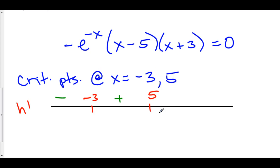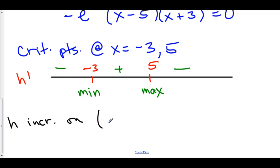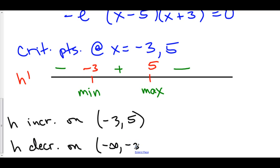To the right of 5, let's try x = 6: negative on the outside, positive from (6 minus 5), and positive from (6 plus 3), so that's negative. Therefore we have a relative min at x equals negative 3 and a relative max at x equals 5. Furthermore, h increases on the interval from negative 3 to 5, and h decreases on the intervals from negative infinity to negative 3 and from 5 to infinity.